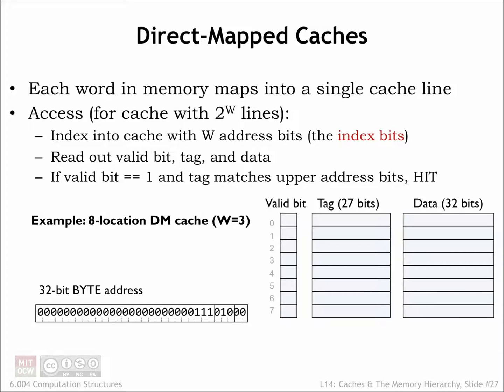There are of course many more memory locations than there are cache lines, so many addresses are mapped to the same cache line, and the cache will only be able to hold the data for one of those addresses at a time.